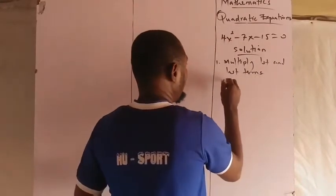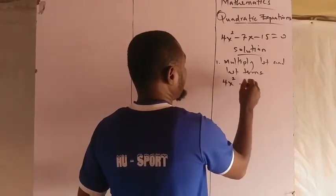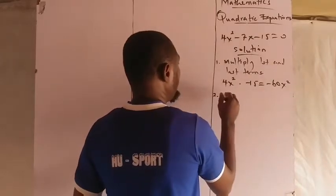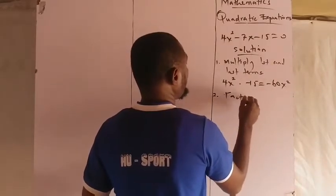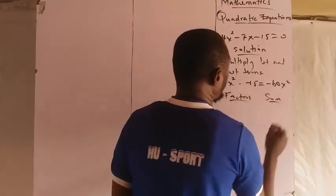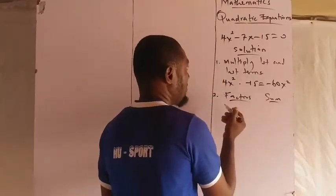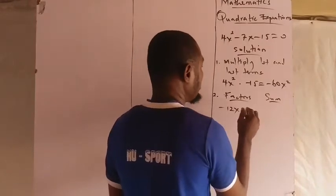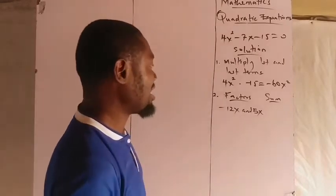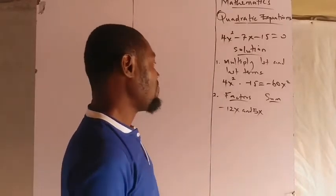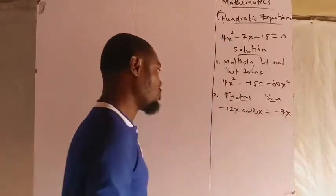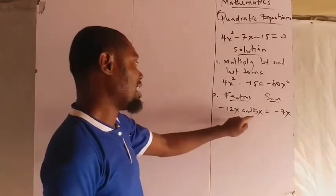The first thing is multiply the first and the last term. If I do that I'll have 4x² times -15, which gives us -60x². Step 2: find factors. I'll get my factors: I have -12x and 5x.